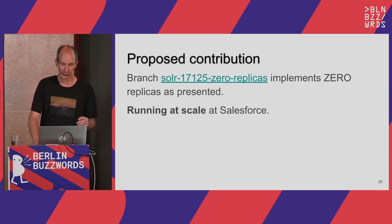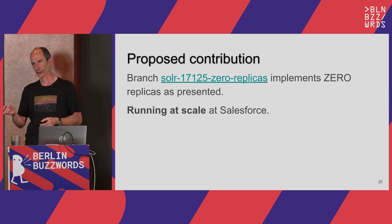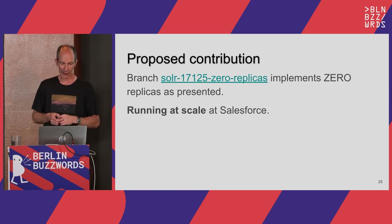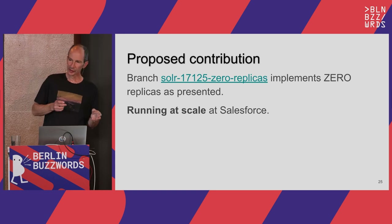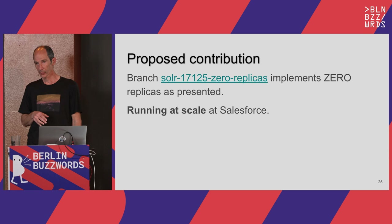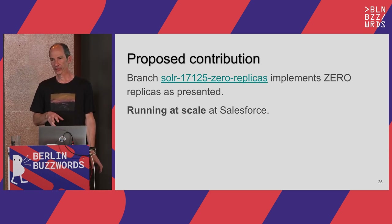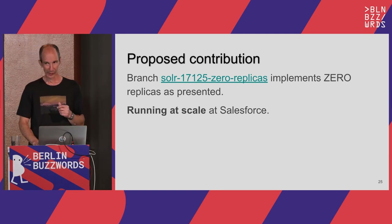The proposed contribution is accessible by searching for the Zero replicas branch in Apache Solr — there's only one. It implements everything discussed to this point. It is a cleaned-up version of what Salesforce runs in production on Solr 8 and 9, and this branch is based on main. It is running at high scale in multiple places at Salesforce — it's not a POC, it's not a toy, it's not perfect, but it is really running at high scale.